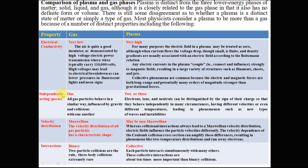The second property is independently acting species. Gas contains neutral atoms — that is, gas contains only one species — but inside the plasma, positive ions, electrons and neutral atoms may be present. It means plasma has two or three independently acting species.